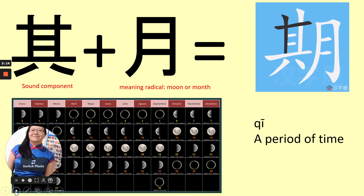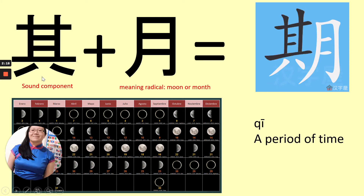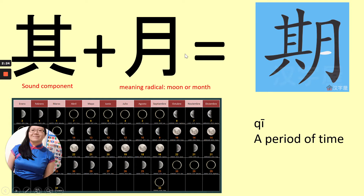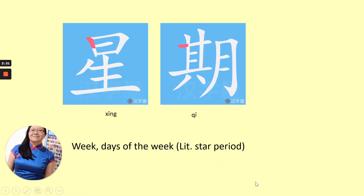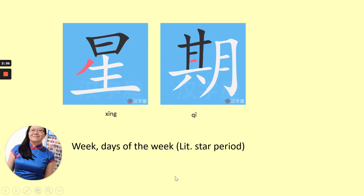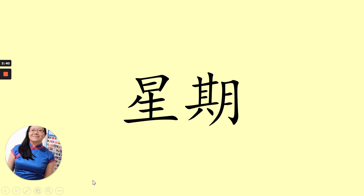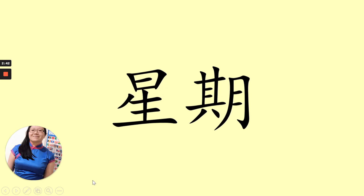The next word we need to look at is qi. This qi is combined with a sound component — it is pronounced qi — and the meaning component means yue, meaning moon or month. So qi on its own means a period of time. Then if we look at xing qi together, that means week or days of the week. It literally means star period. So xing qi is week.